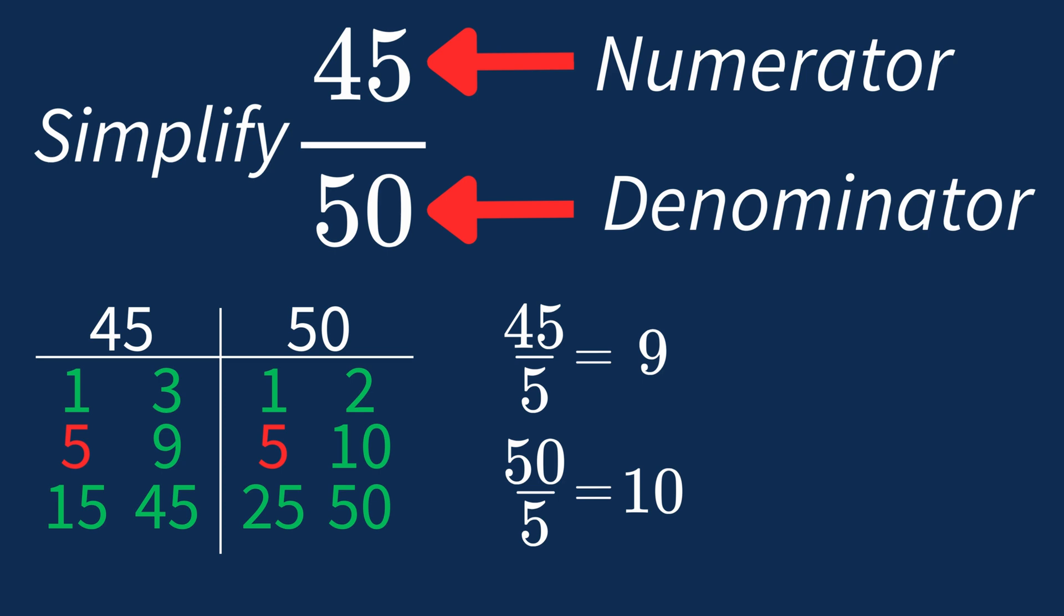So after dividing, the simplified fraction is 9 over 10. And we know that 9 over 10 is in its simplest form, because the only common factor between 9 and 10 is 1. And when 1 is the largest common factor, we know that our fraction is simplified.